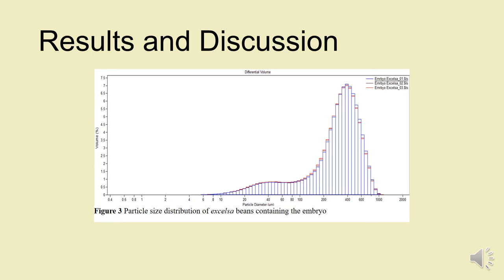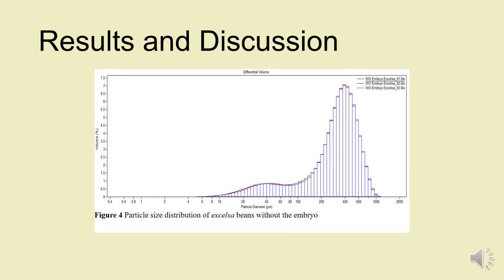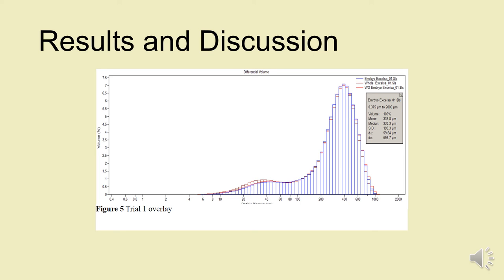However, when we took the particle size distribution of these beans, one containing the embryo, this is the particle size distribution of the beans with the embryo. And this one is without the embryo. And then overlaid that. We did quite a few trials. We did with the embryo, whole beans, and without the embryo. So it's just the embryo, whole beans, and then without the embryo.